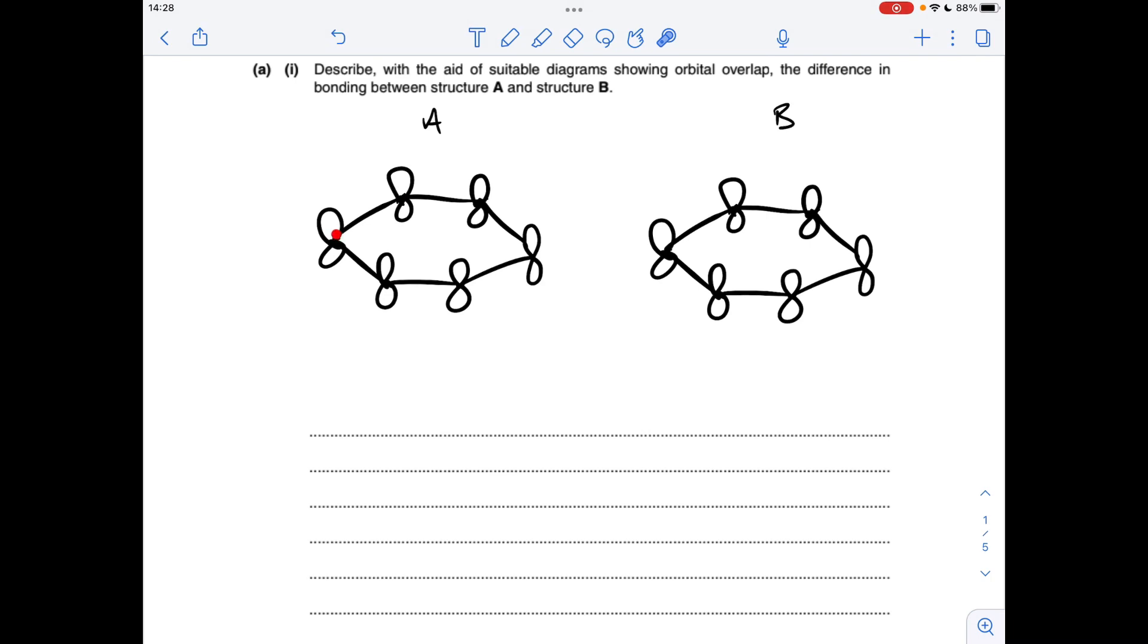We've got a p orbital on each carbon of the ring. So remember A was the Kekule structure, so what's going on in terms of orbital overlap? Well if we start here, this pair of p orbitals overlaps, then we miss out a bond and then we go to here, they overlap and then they overlap. And obviously that's going to generate a double bond here, single bond there, double bond here and so on.